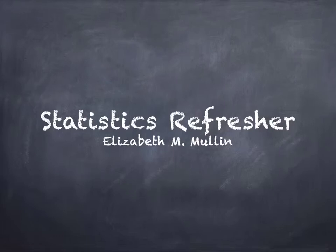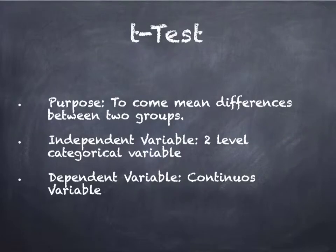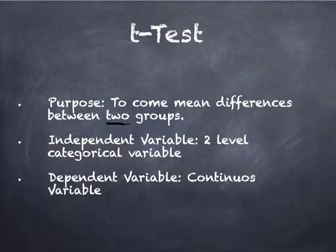The purpose of this video, the third in the statistics refresher set, is to go over the four different types of t-tests that students might use. The purpose of a t-test is to compare mean differences between two groups — you are limited to two groups. The independent variable is a two-level categorical variable, usually a two-level nominal variable. The dependent variable is a continuous variable, meaning it's either an ordinal, interval, or ratio variable.